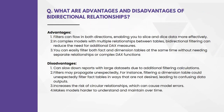The next question: what are the advantages and disadvantages of bi-directional relationships? Advantages: filters can flow in both directions, enabling you to slice and dice data more effectively. In complex models with multiple relationships between tables, bi-directional filtering can reduce the need for additional DAX measures. You can easily filter both fact and dimension tables at the same time without needing separate relationships or complex DAX functions. Disadvantages: it can slow down reports with large datasets due to additional filtering calculations. Filters may propagate unexpectedly — for instance, filtering a dimension table could unexpectedly filter the fact table in undesired ways. It can also increase the risk of circular relationships which can cause model errors.